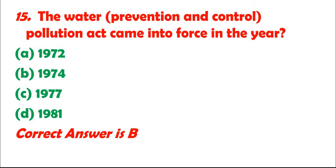Question 15: The Water Prevention and Control Pollution Act came into force in the year: A. 1972. B. 1974. C. 1977. D. 1981. Correct answer is B.